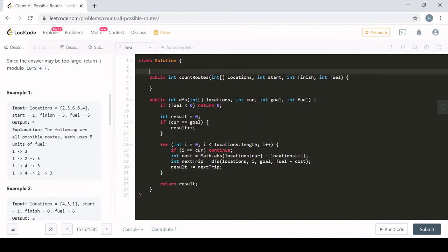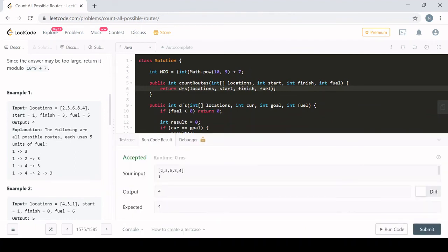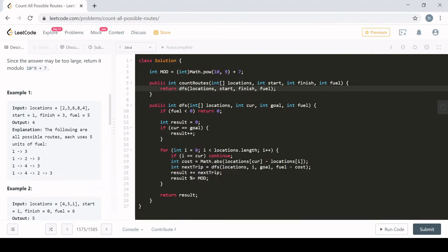But I missed something and that was the mod. So I'm going to create a mod variable up here. Because the answers can be large, I have to remember to mod out by this. It was 10 to the 9th plus 7 as my mod. So every time I add to my result, I'll also mod by the appropriate value. So then all I need to do is just call my algorithm and let it do the work. Locations from the start to the finish using that much fuel. So if we run this, we should get the right answer for the test case. Yep. But the problem is, if I were to submit it, it wouldn't be fast enough.